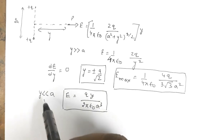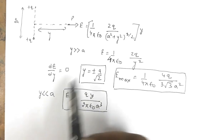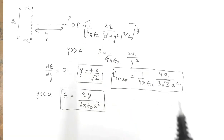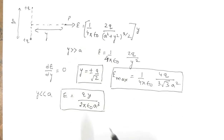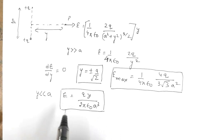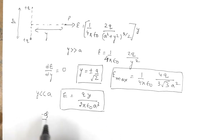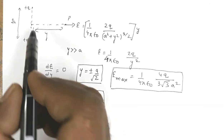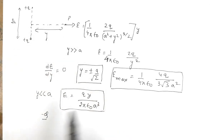When y << a, the term a² + y² is replaced by a², and you get this result. Now if we place a charge −q at that location, at distance y...